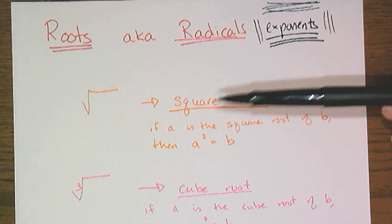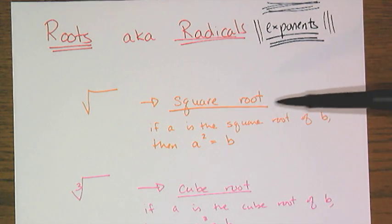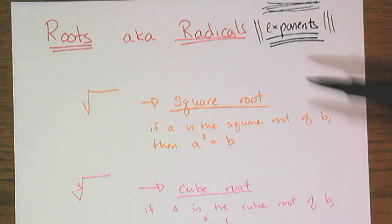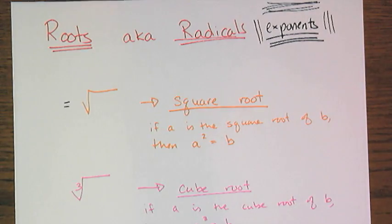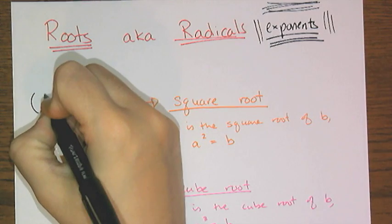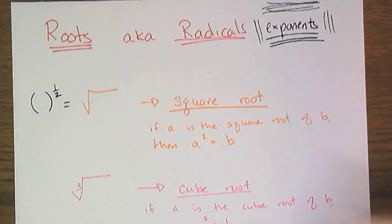We know the definition of a square root is, if a is the square root of b, then a squared equals b. But here is what it is in exponential form. A square root is exactly the same as raising something to the one-half power.